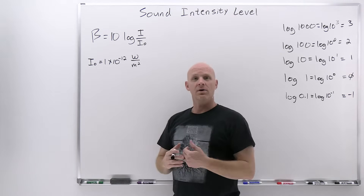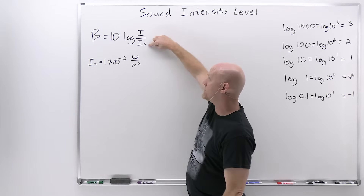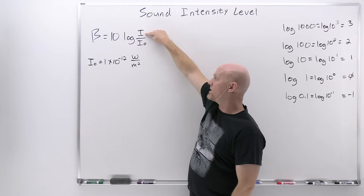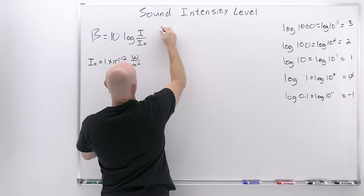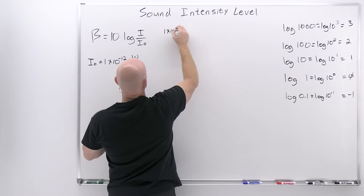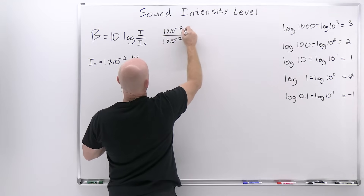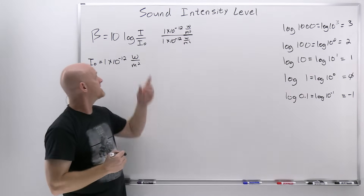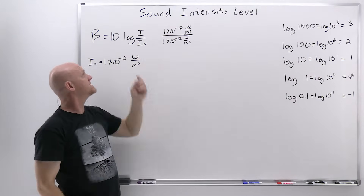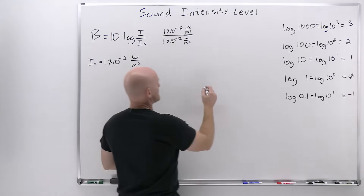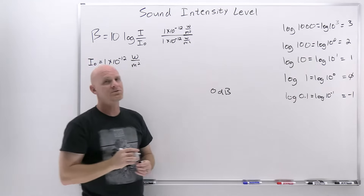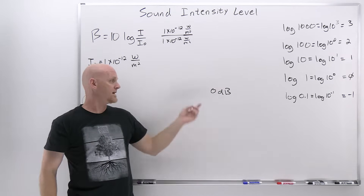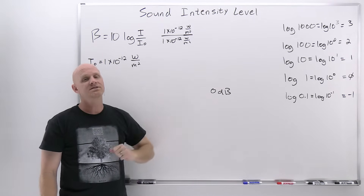What if you're hearing a sound that actually has that value — 1×10⁻¹² W/m²? You'd plug that in for both I and I-naught in the equation. The ratio I over I-naught would equal 1, the log of 1 is 0, and 10 times 0 is still 0. So you'd get a value of 0 decibels. That makes sense: the lowest sound possible to hear should have a value of 0 on the decibel scale.